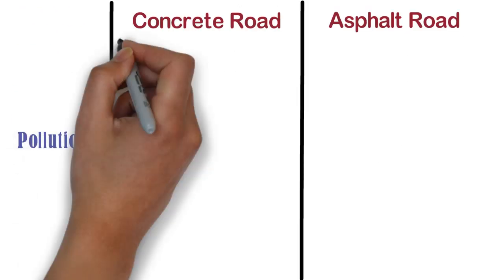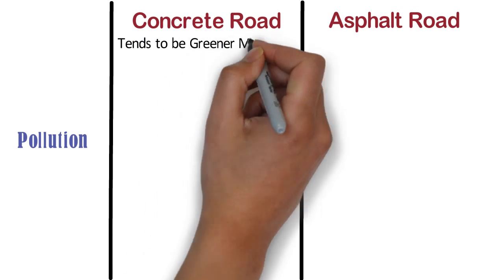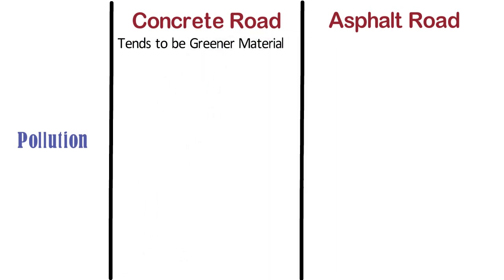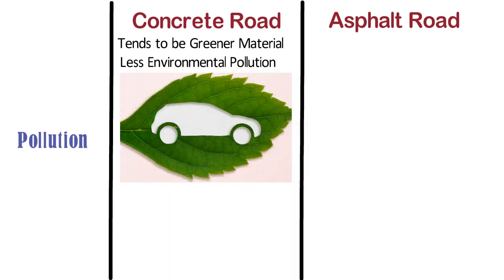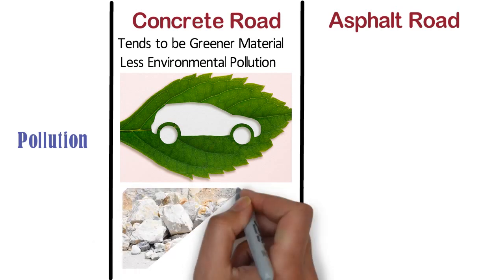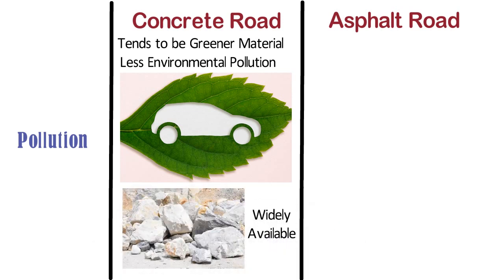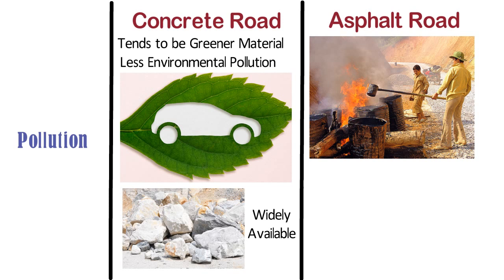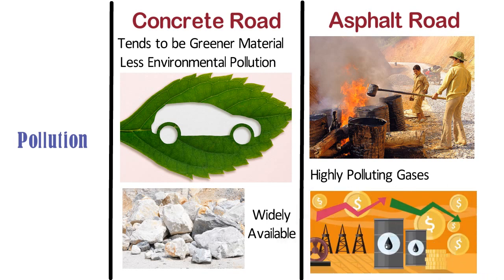Pollution. Concrete tends to be a greener material — producing it creates less environmental pollution, and cars run with better fuel efficiency on concrete. Concrete is also produced from limestone, which is widely available. Asphalt produces lots of highly polluting gases at the time of melting it for paving, and petroleum is required to produce asphalt, which is a very costly product.